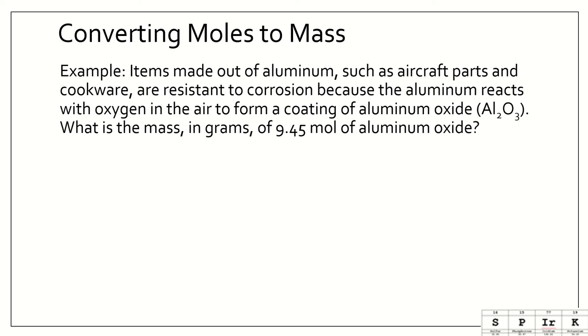For example, items made out of aluminum, such as aircraft parts and cookware, are resistant to corrosion because the aluminum reacts with oxygen in the air to form a coating of aluminum oxide. What is the mass in grams of 9.45 moles of aluminum oxide? We are going to go from moles to grams. In order to do that, we need the molar mass of aluminum oxide.